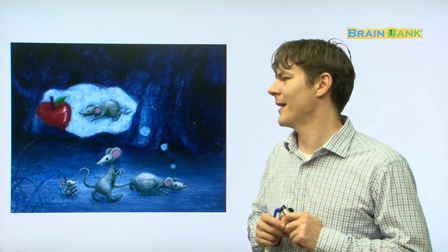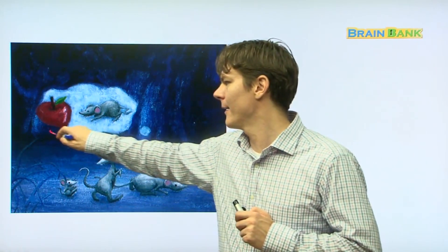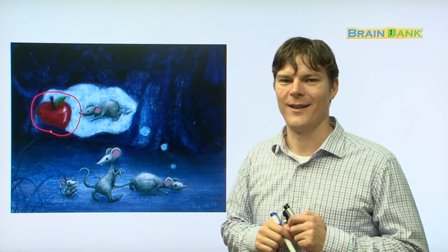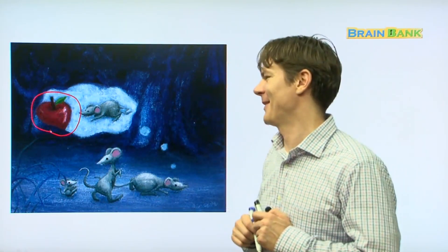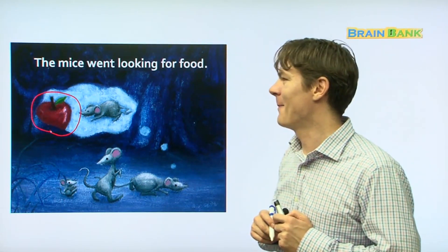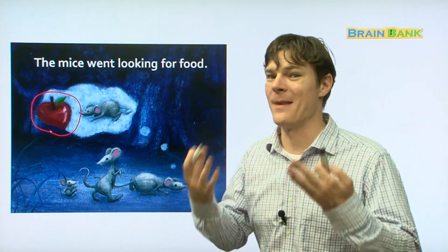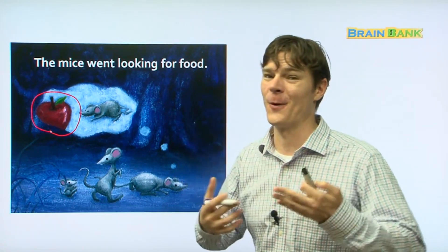There they are walking, la la la la la, and they see some kind of food. What kind of food do they see right here? What is that? An apple. Delicious red apple. The mice went looking for food.